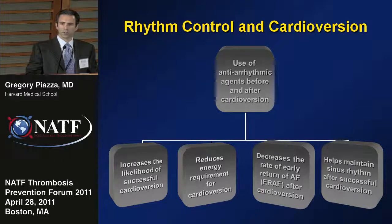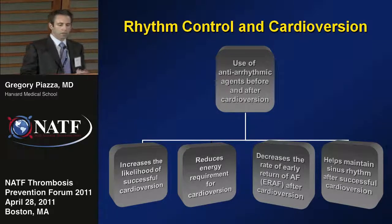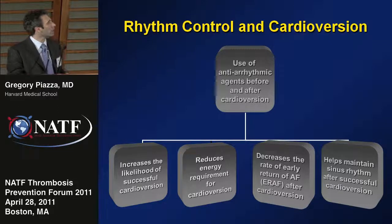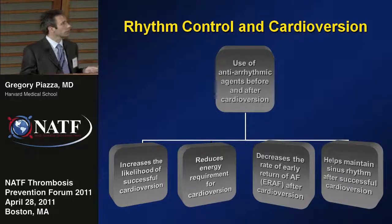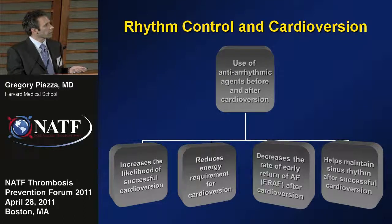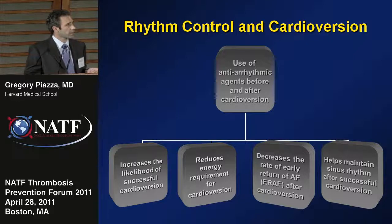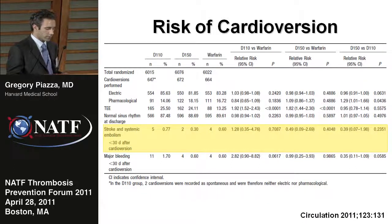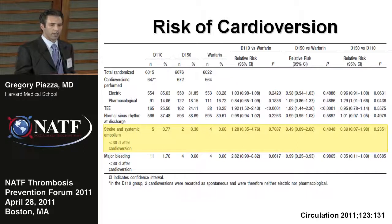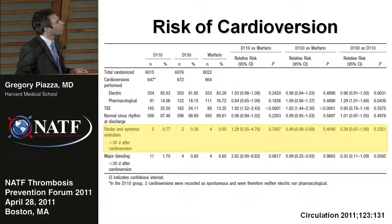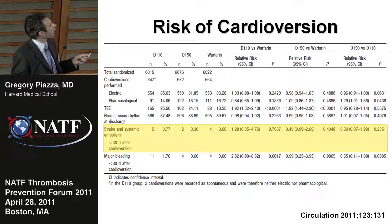Rhythm control is frequently used in conjunction with an attempt at electrical cardioversion. The use of an antiarrhythmic agent before and after cardioversion is thought to increase the likelihood of successful cardioversion, reduce the energy requirement, decrease the rate of early return of atrial fibrillation after cardioversion, and help maintain sinus rhythm. One interesting finding from a large registry of cardioversion patients was that the rate of systemic embolism and stroke was higher than previously thought, at five to six patients per thousand.